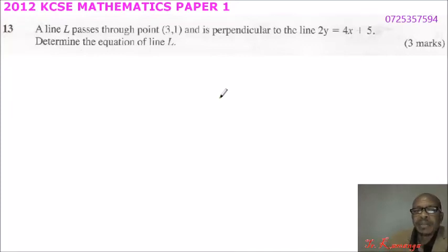Question number 13, 2012 KCSE Mathematics Paper 1. We are told a line L passes through point (3,1) and is perpendicular to the line 2y equals 4x plus 5. Determine the equation of line L.